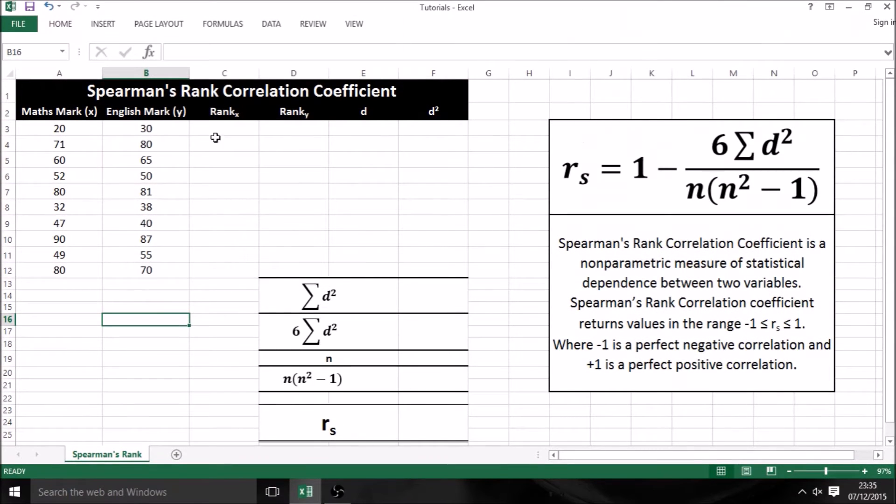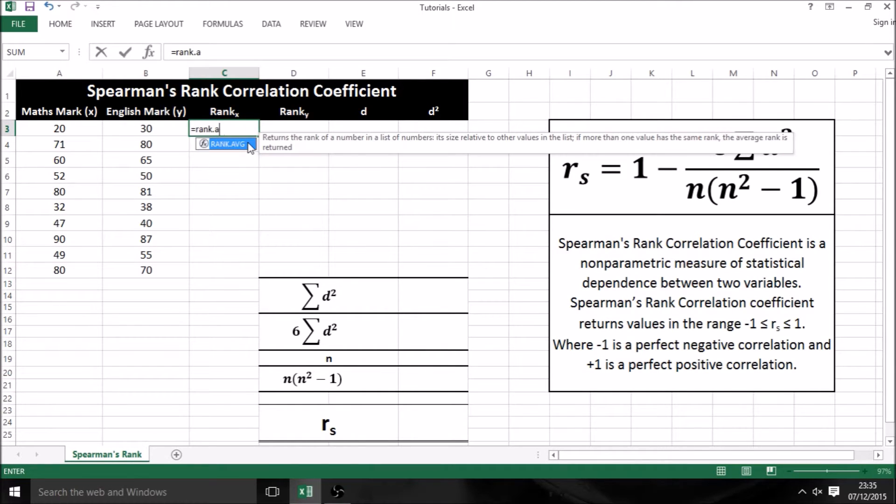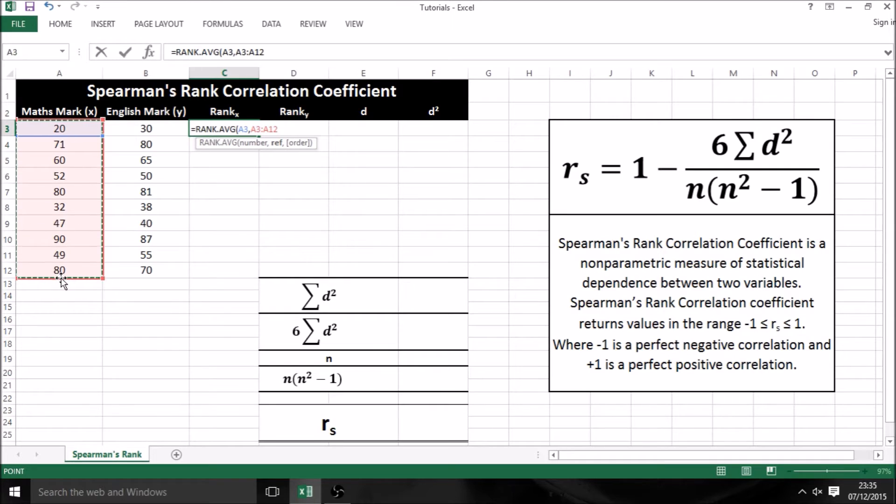I will begin by doing our x values, or in this case our maths mark. I'm going to start in this cell for rank x and type in equals rank.avg, which is the ranking formula of Spearman's rank, then press tab and select our first value. Next, I'm going to type in a comma and select my whole range for the values I'd like to rank, then press F4 on my keyboard for absolute cell referencing.